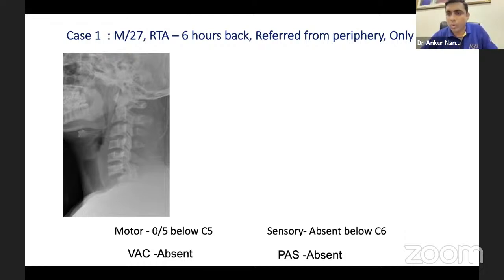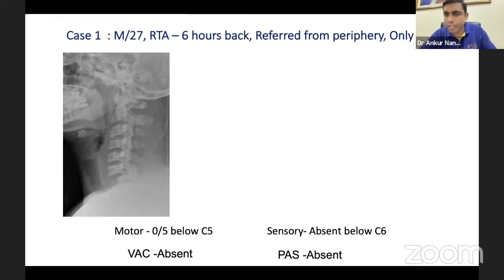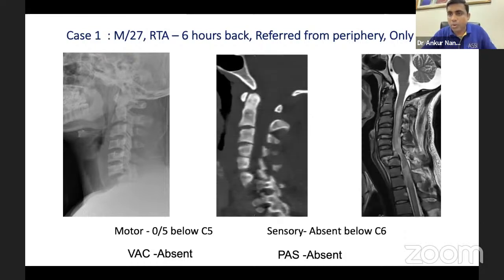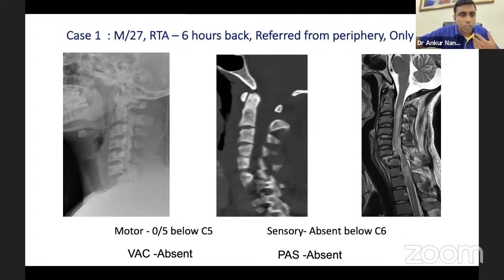It is very important to do a primary survey, get vitals sorted, and then consider further radiological evaluation. These patients may have concomitant injuries and other areas should be screened. The MRI in this case shows significant cord edema. Dr. Gautam, what vital parameters should we expect and what should we be looking for in this patient?